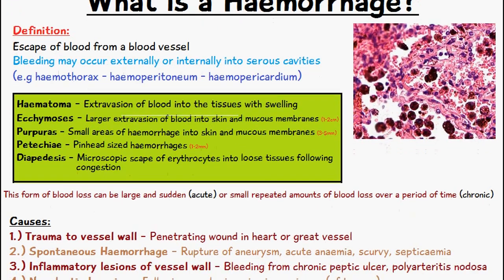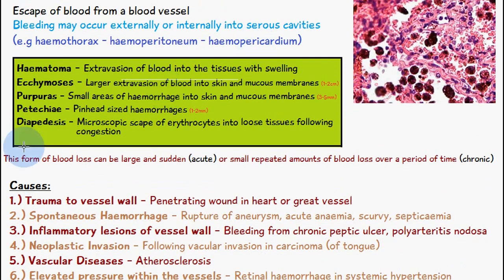There are a few different types of hemorrhages. First, there is something called a hematoma, which is where blood leaves a vessel — it might be injured — goes into the tissues, and causes a swelling. That swelling is called a hematoma.